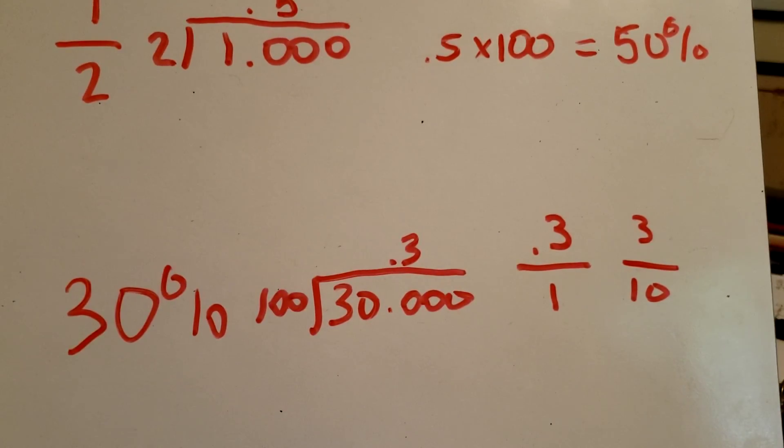So the percentage is 30 percent, the decimal is 0.3, and the fraction is 3 tenths.